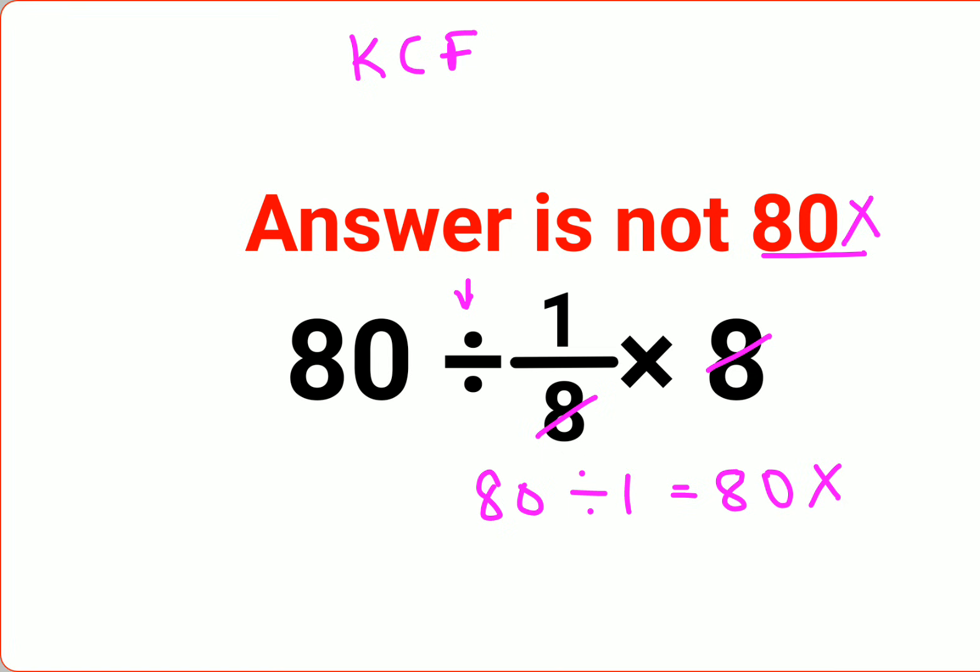Why is that? Because there's a rule in mathematics which says that division and multiplication will always hold equal precedence over each other. So in sums like this, you need to remember that you're going from left to right.